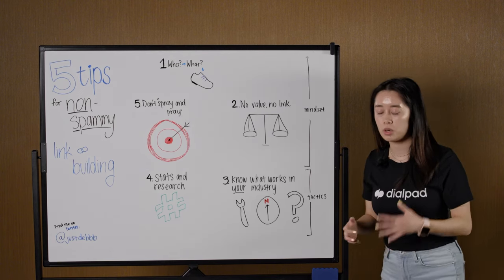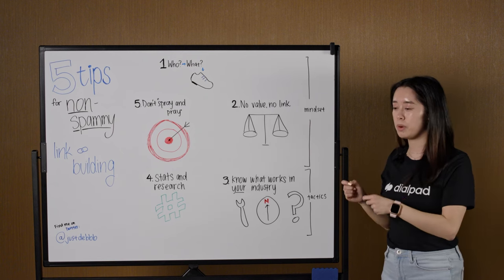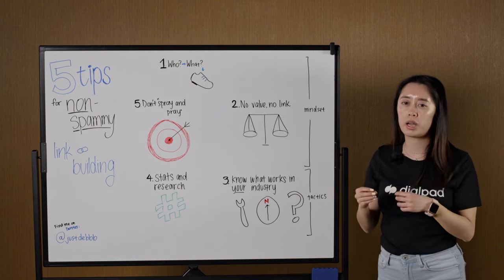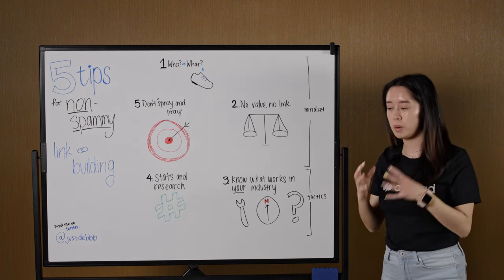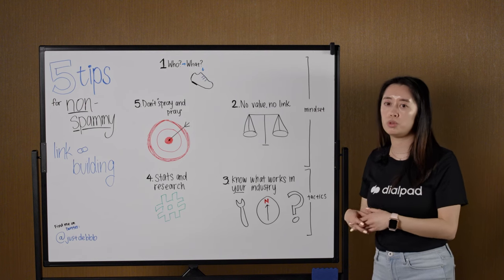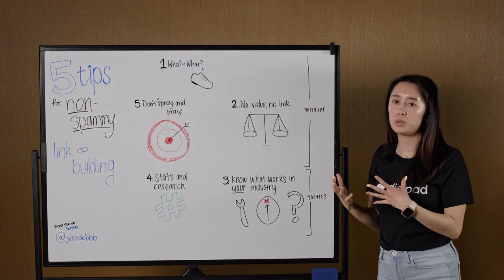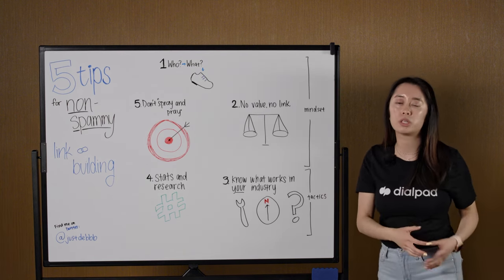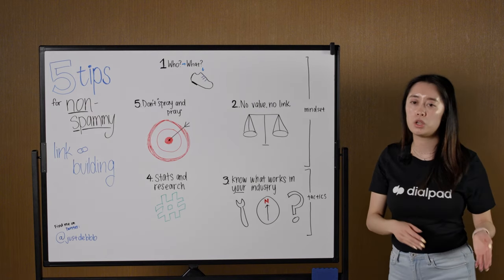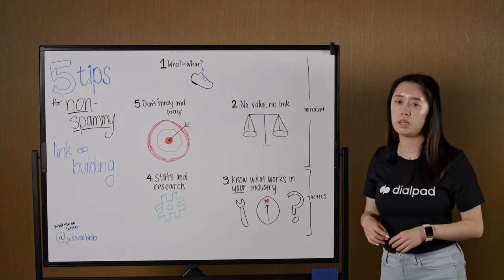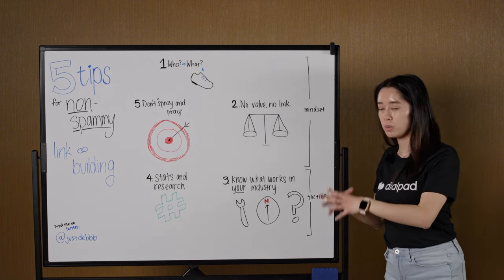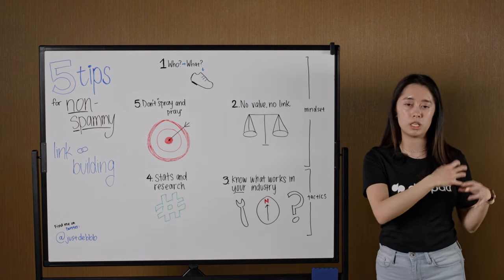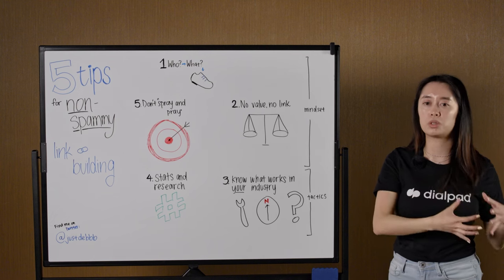Keep in mind that each group values different things. You might create a piece of content that is very helpful to your customers or anyone who comes across your blog, but that content might not be super valuable to journalists, other content writers, or the people you want links from. So you need to understand what content they value and make sure that value shows in your content.